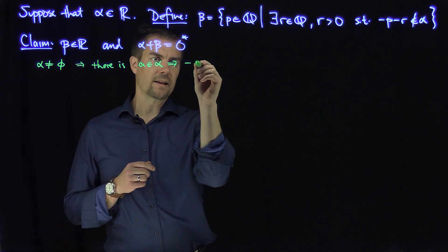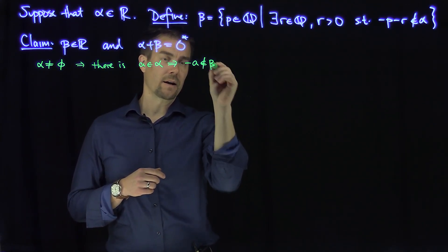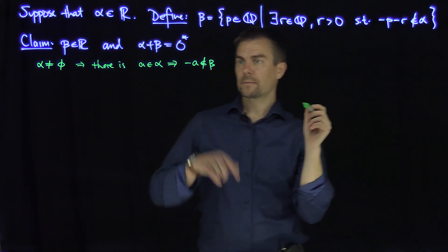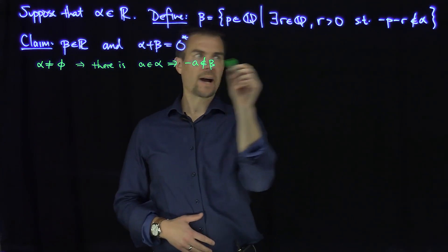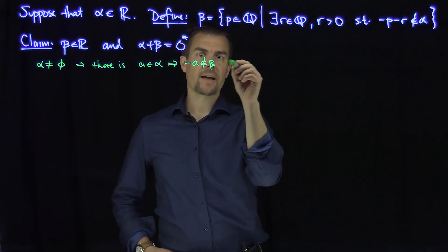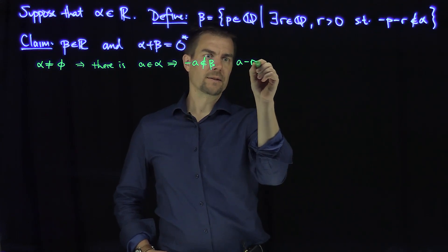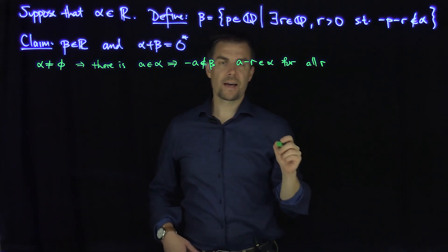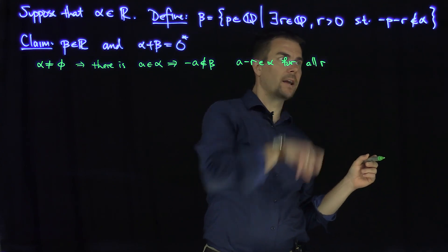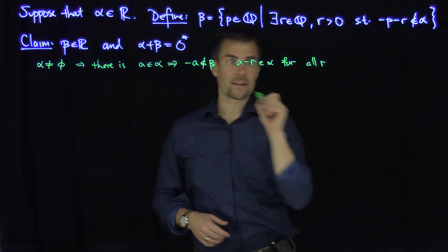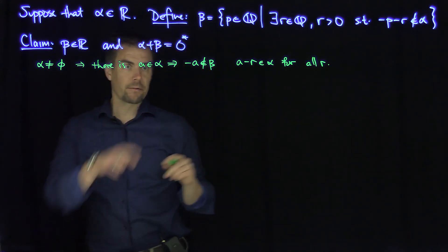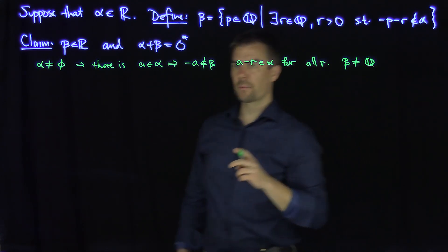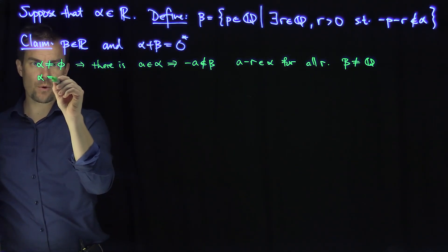If little a is in alpha, this implies that negative a is not in beta. Negative a is not in beta because no matter what we subtract from negative a, that would be less than a — so a minus r is in alpha for all r. This implies negative a cannot be in beta, and so beta is not the entire set of rational numbers Q.